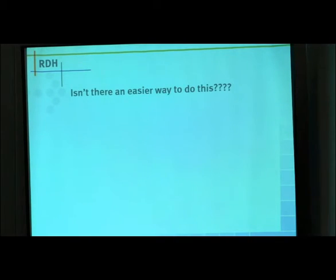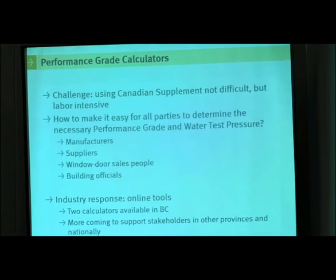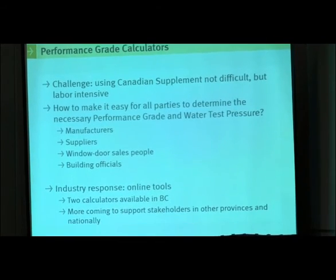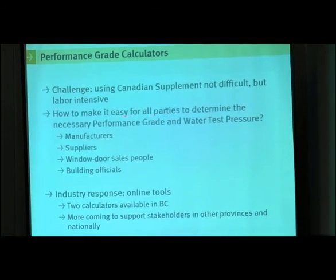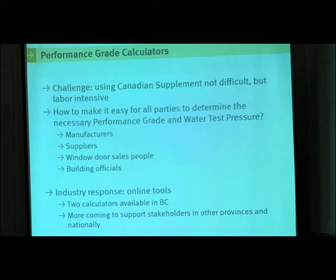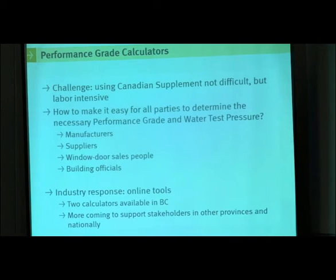After people have done a few hands-on exercises, they ask: isn't there an easier way to do this? And there is. We now have several online performance grade calculators to do this for you. There are two calculators available in BC and another one in Ontario put together by Fenestration Canada. They make it easier for manufacturers, suppliers, salespeople, and building officials to determine performance grades.